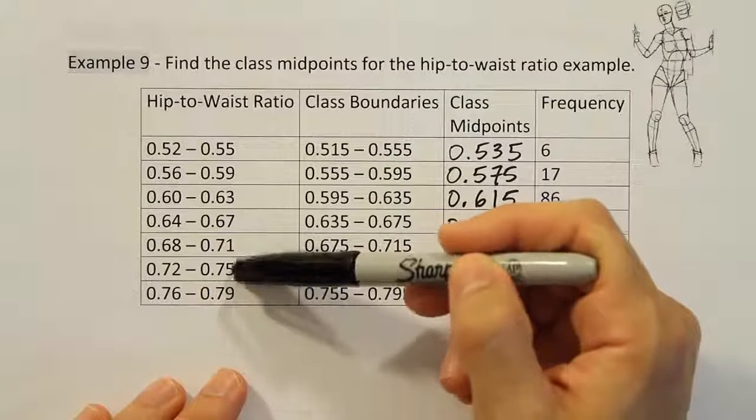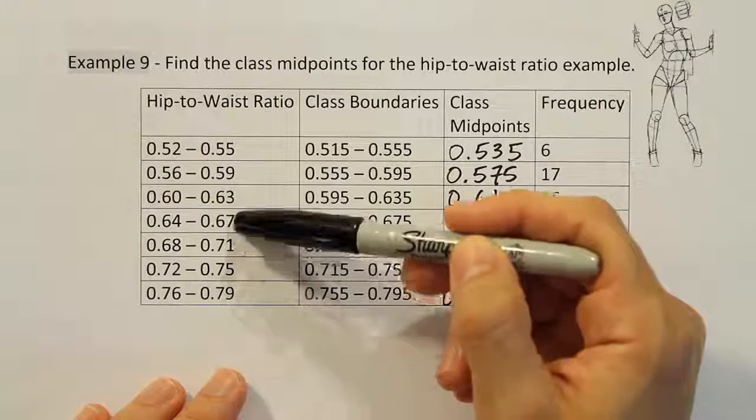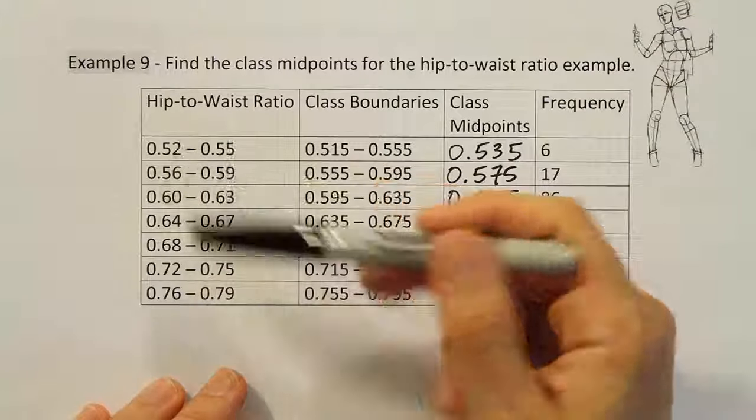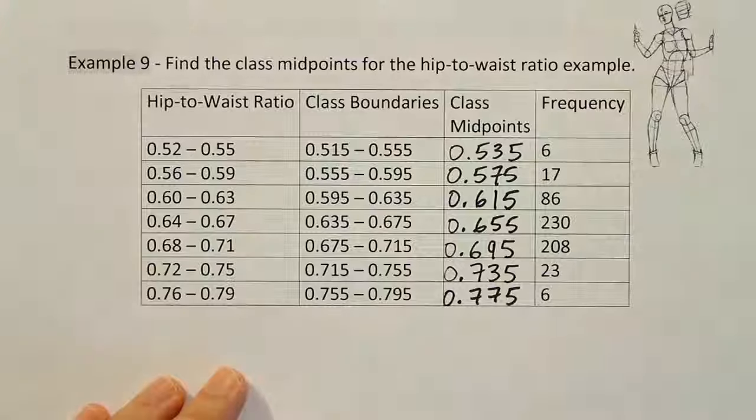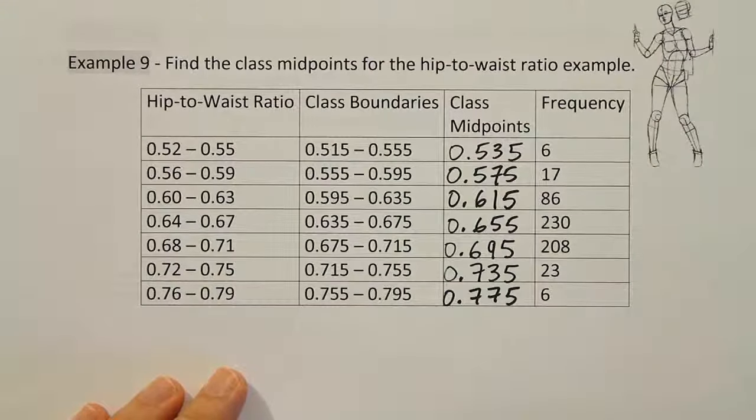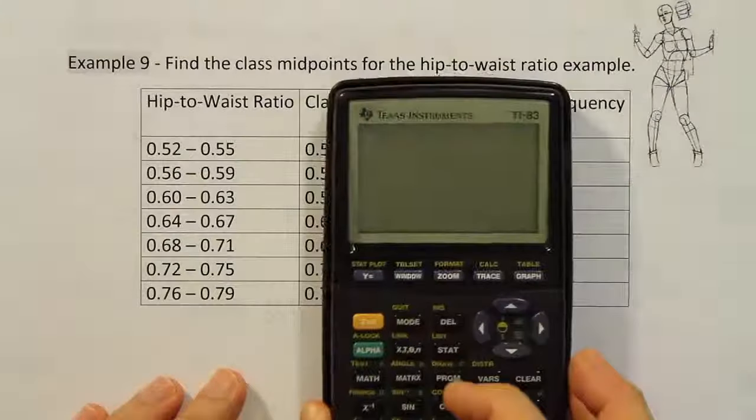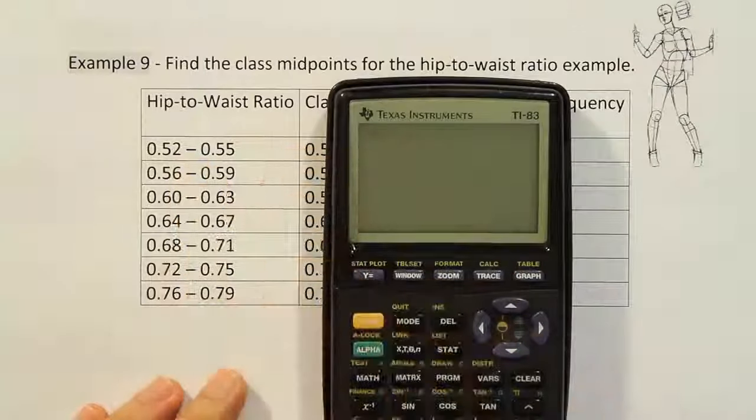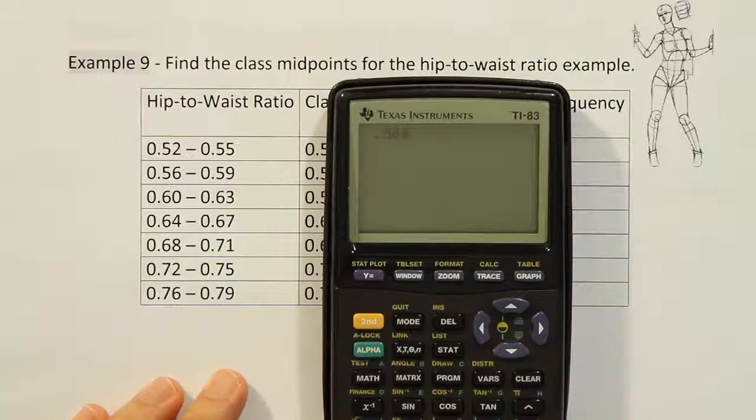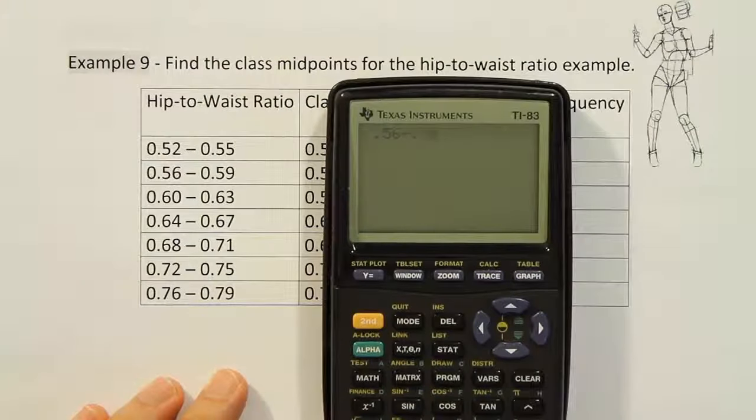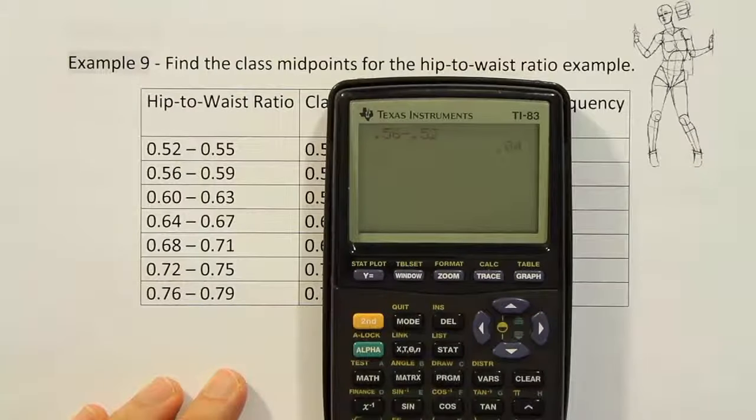And that would also work for the upper class limits. Any two consecutive ones they all have the same difference and that difference is the class width. So for example if I took the first pair of lower class limits, 0.56 and I subtract off 0.52, we get the difference or the common difference of 0.04.